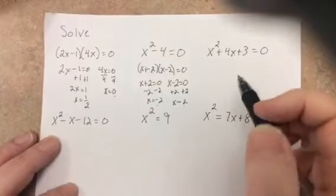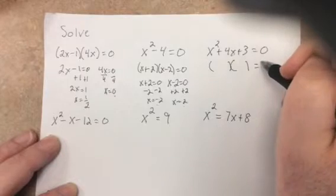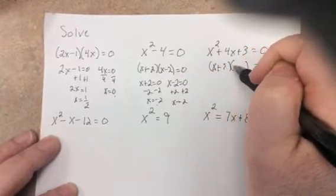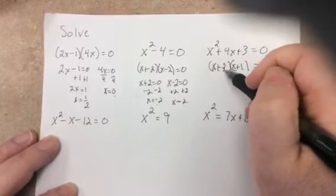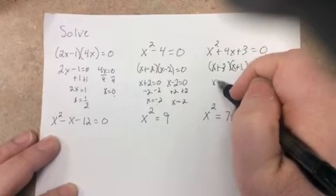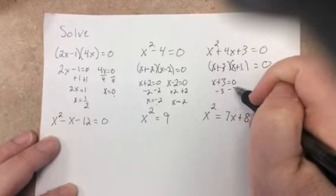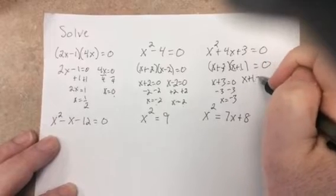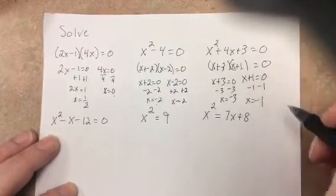This one's a trinomial, factor it up. It's already equal to zero, so it's x plus three times x plus one. Three times one is three, three x plus one x is four x. Set both equal to zero and solve. We get x equals negative three or x plus one equals zero, subtract one, x equals negative one.